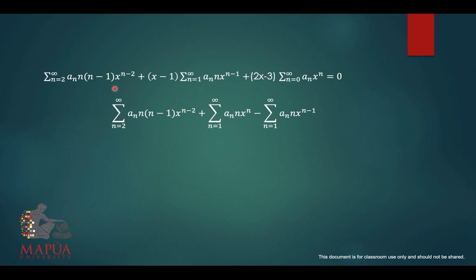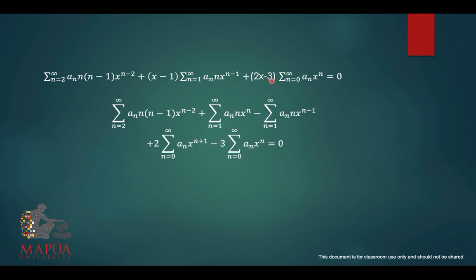Copying the first term, then x times x to the n minus 1 gives x raised to n. Minus 1 times the series is the third term. For the fourth term, multiplying x by x to the n gives x raised to n plus 1. Minus 3 times the series is the fifth term. We now have 5 terms: first, second, third, fourth, and fifth.